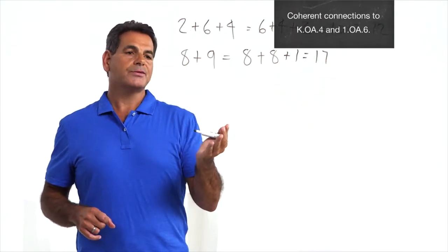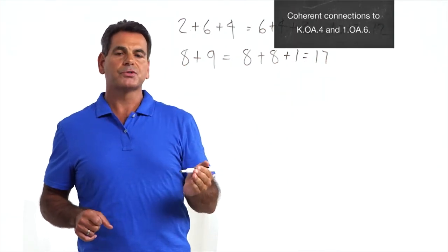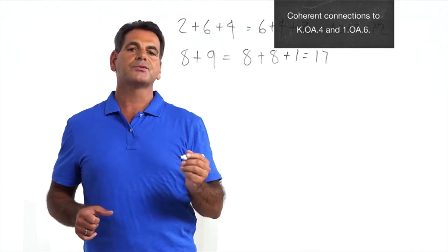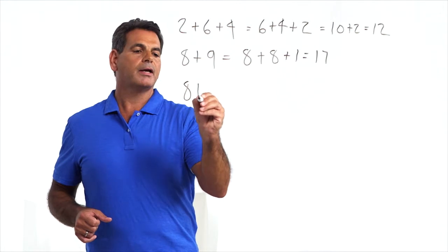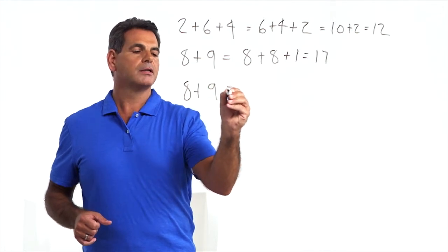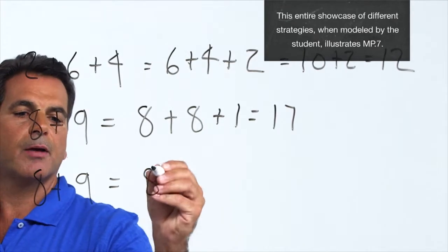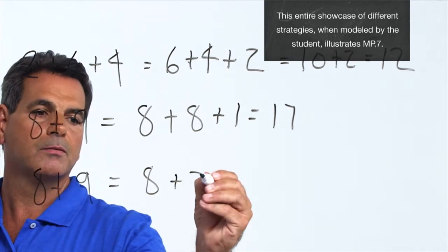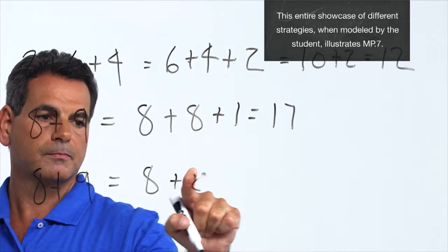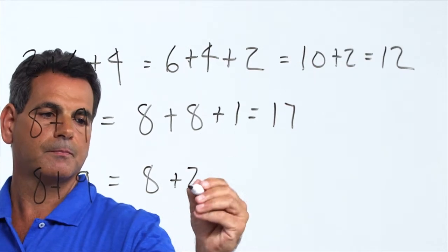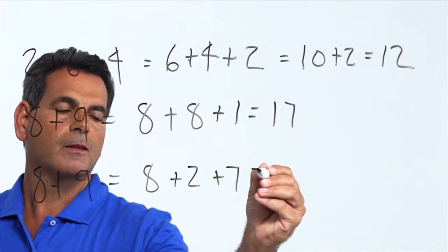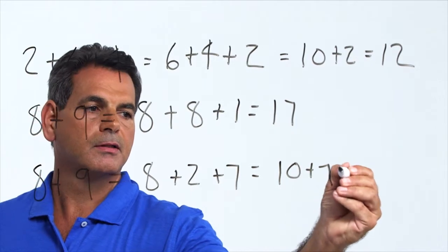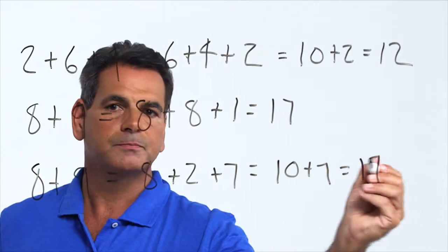How about making tens? That's something students have been doing from kindergarten up through second grade. Let's use making tens as a strategy. Eight plus nine: I'm going to decompose this nine into a two and a seven. Eight plus two becomes ten, plus seven becomes seventeen.